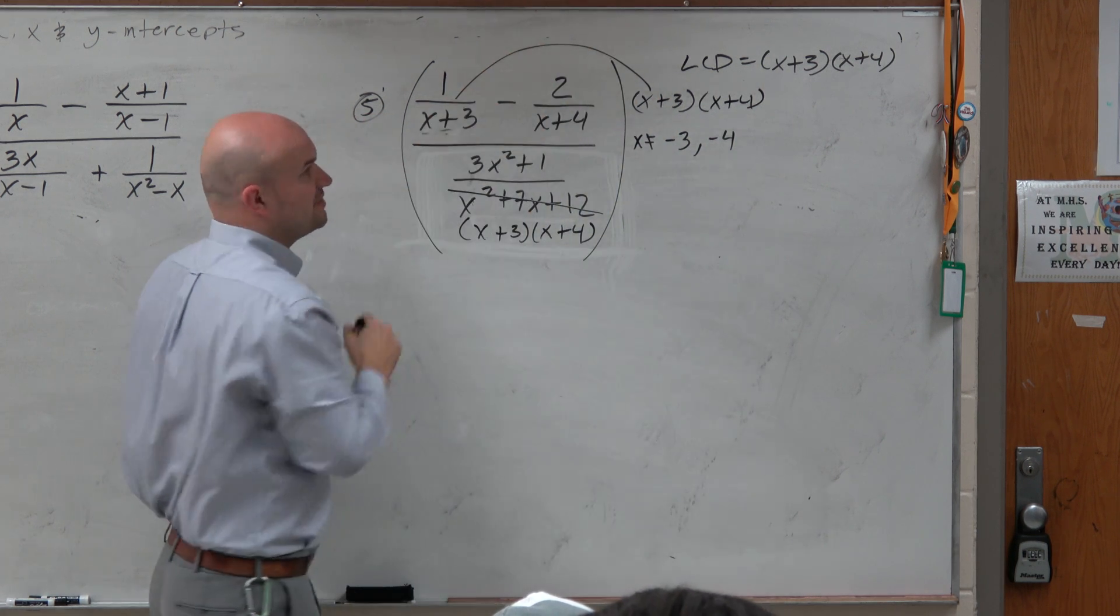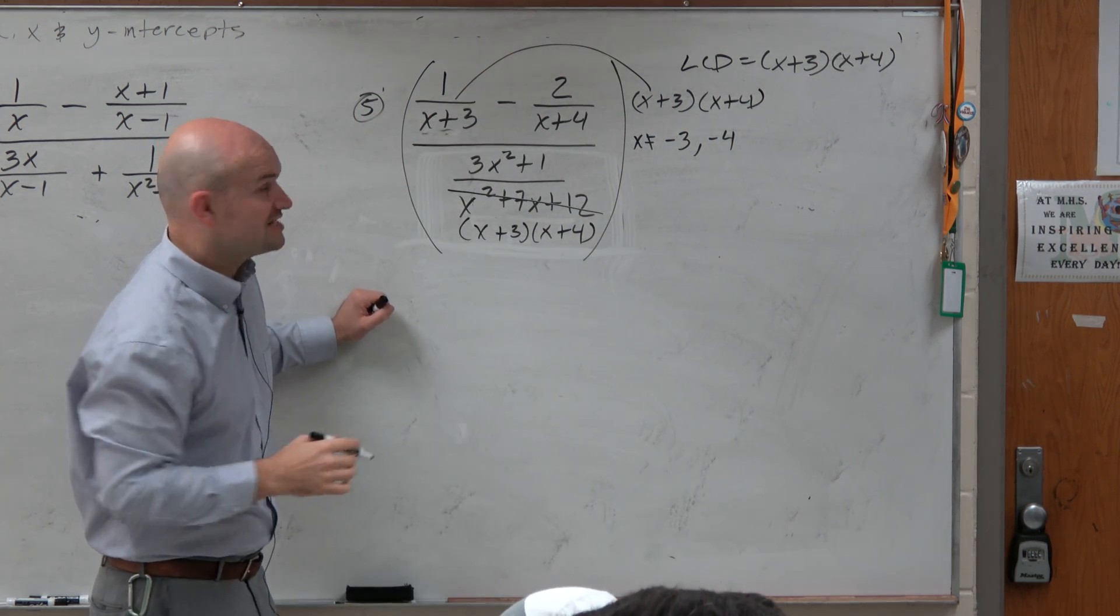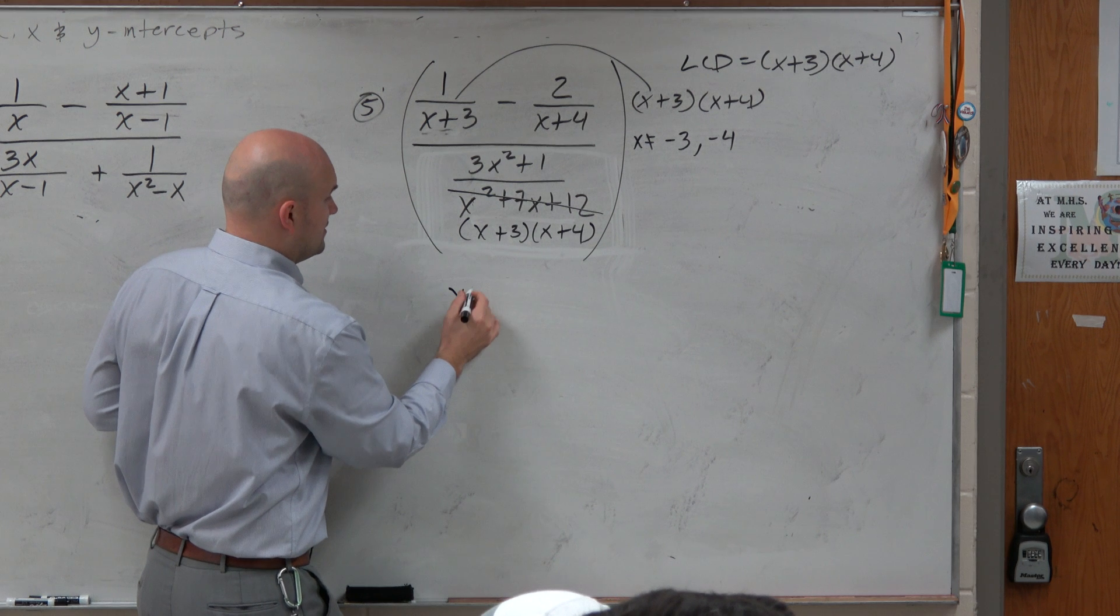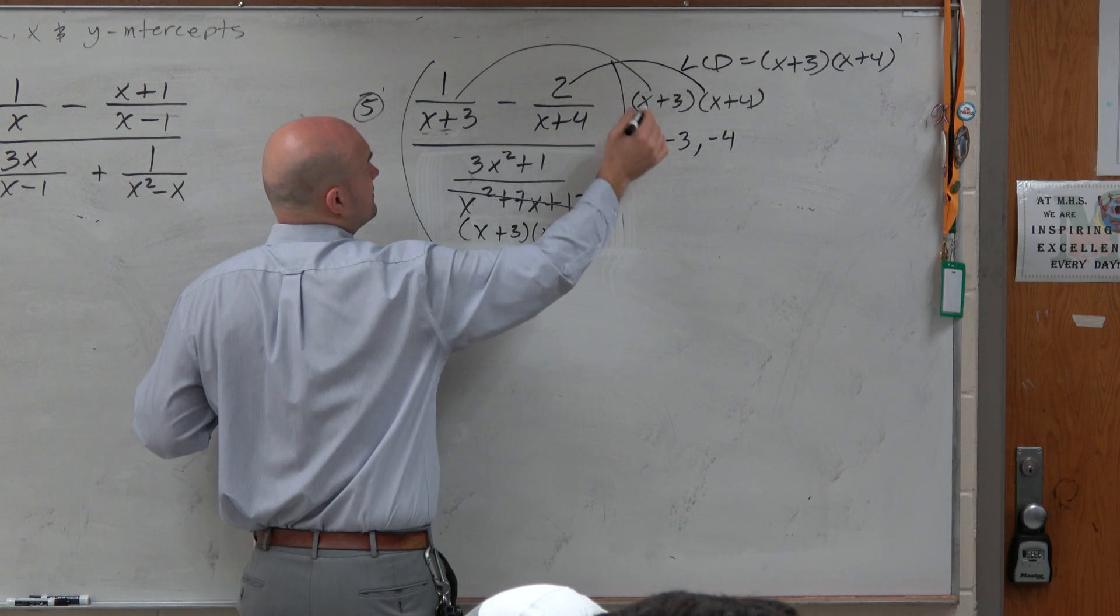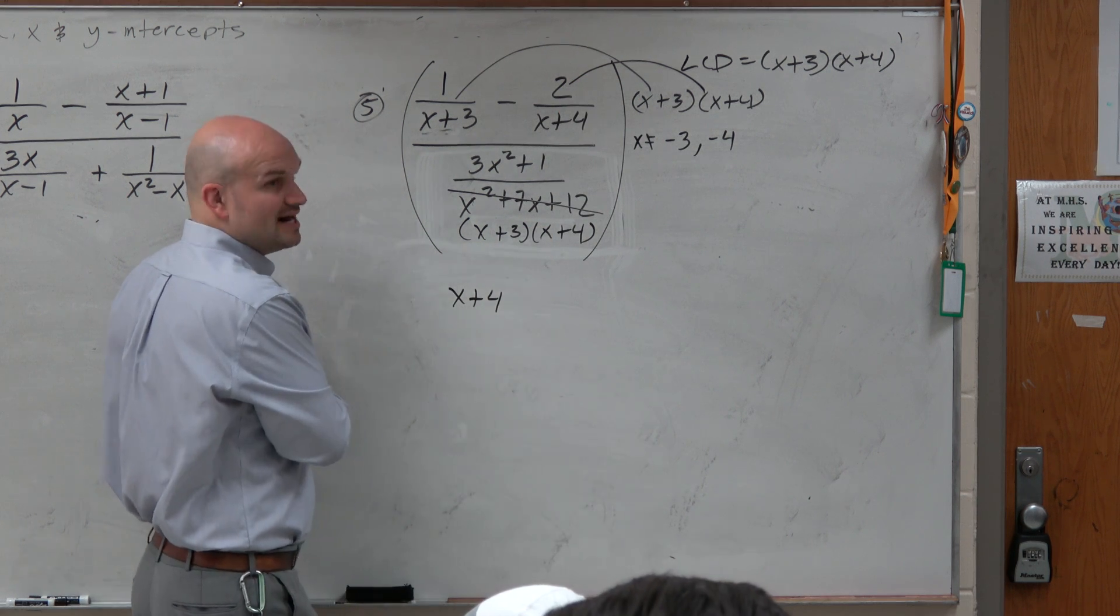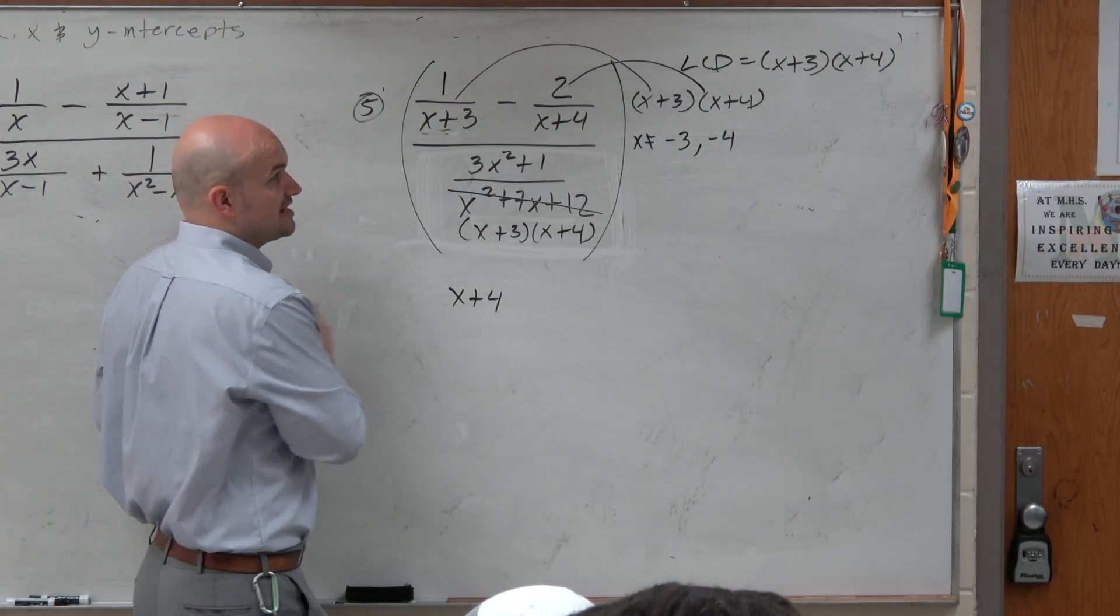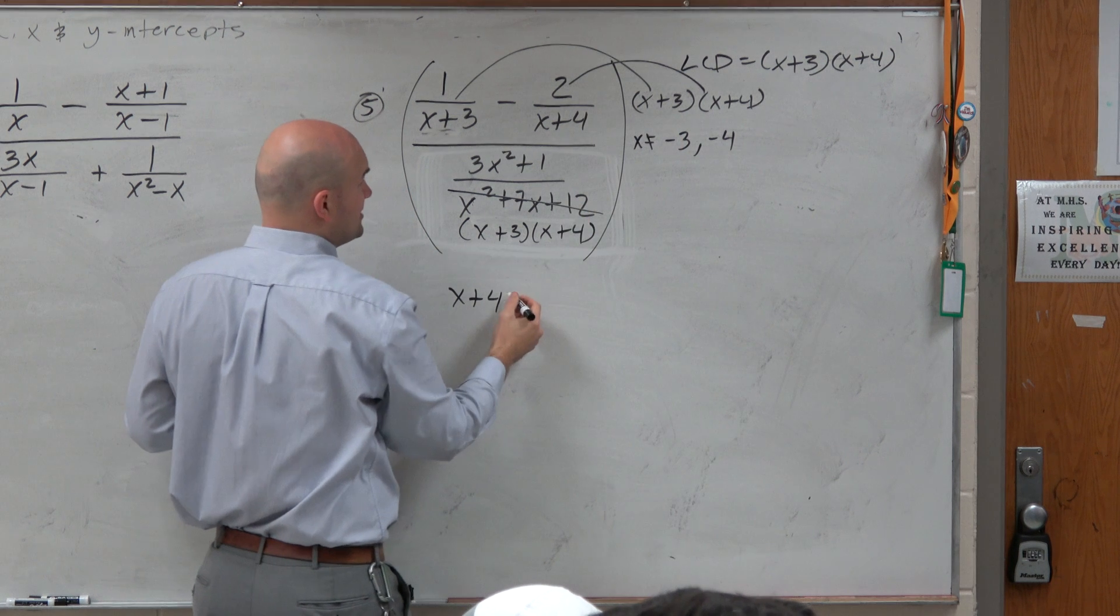when you multiply this, what divides out? x plus 3. So you're just left with the x plus 4. When you multiply this times that, what divides out? x plus 4. So you're just left with the x plus 3.